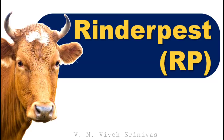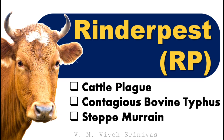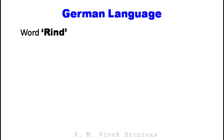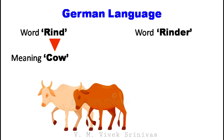Rinderpest has several other names: cattle plague, contagious bovine typhus, and steppmurin. The word 'rind' is derived from the German language and means 'cow.' In German, 'Rinder' is an occupational surname meaning 'cattle farmer.'